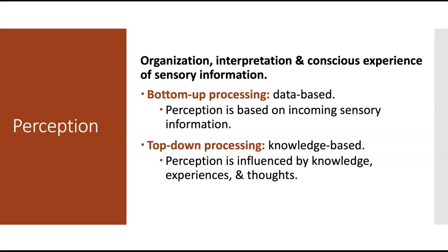Another way to explain top-down processing: when you type a few letters into your phone or Google, it offers to complete the word or sentence for you. That's essentially what's happening with top-down processing — your brain says, 'I think I know what comes next,' and gives you the answer.